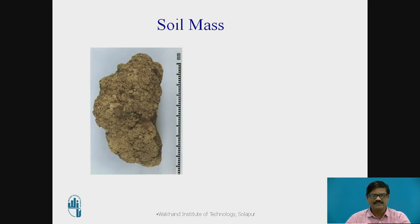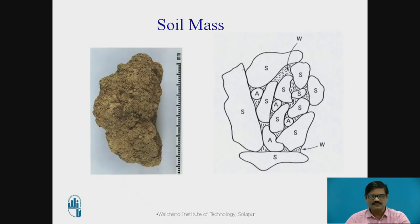In the picture on the left-hand side, we can see a typical soil mass. This soil mass basically consists of soil solid, air, and water. These component parts can be represented on the right-hand side. S indicates the soil solid, W indicates the water, and A indicates the air.